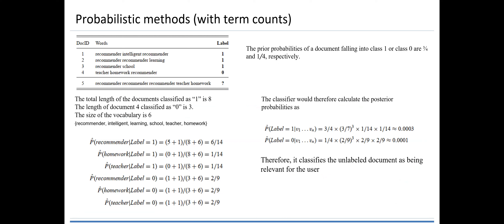For the term counts example, we have documents: document 1 contains 'recommender, intelligent, recommender' with label 1; document 2 contains 'recommender, recommender, learning' with label 1; document 3 contains 'recommender, school' with label 1; document 4 contains 'teacher, homework, recommender' with label 0. Document 5 contains 'recommender, recommender, recommender, teacher, homework' — what is its label? The total length of documents classified as label 1 is 8 terms, the length of label-0 document is 3 terms, and the vocabulary size is 6 unique words: recommender, intelligent, learning, school, teacher, homework.